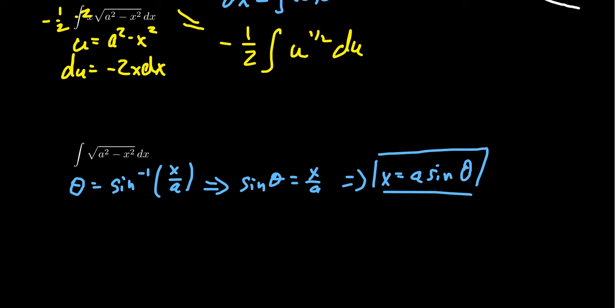x would equal a sine theta, in which case then dx would then equal a cosine theta d theta. And so if you make those substitutions into this integral right here, well, let's see what happens.